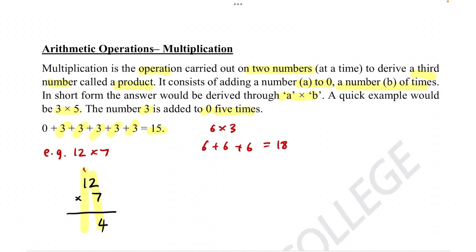And then once again, it'll be 7 times 1, which is 7, plus the 1 carried over, so it'll be 7 plus 1, which is 8. Therefore, the answer to 12 times 7 is 84.